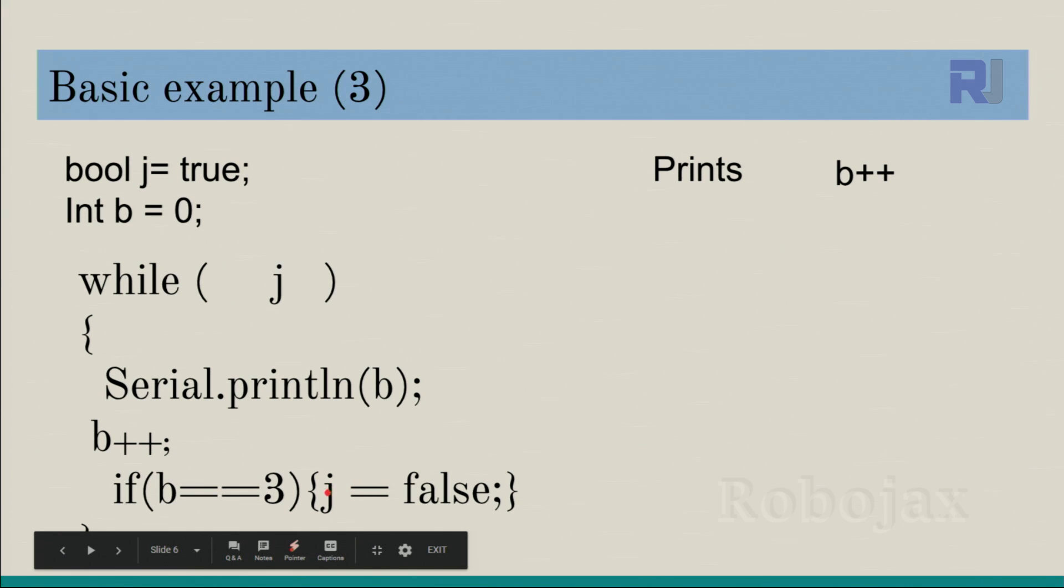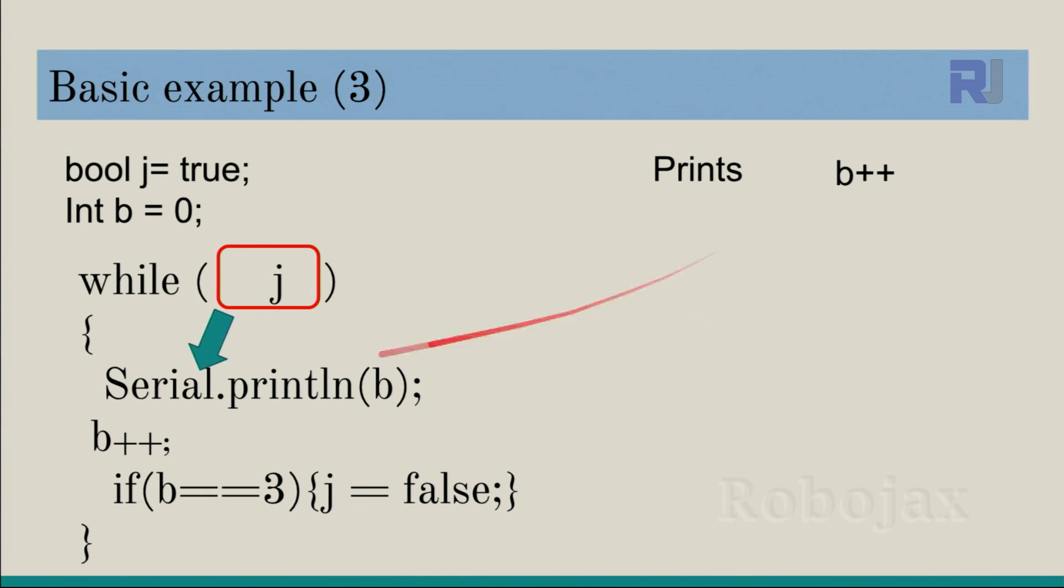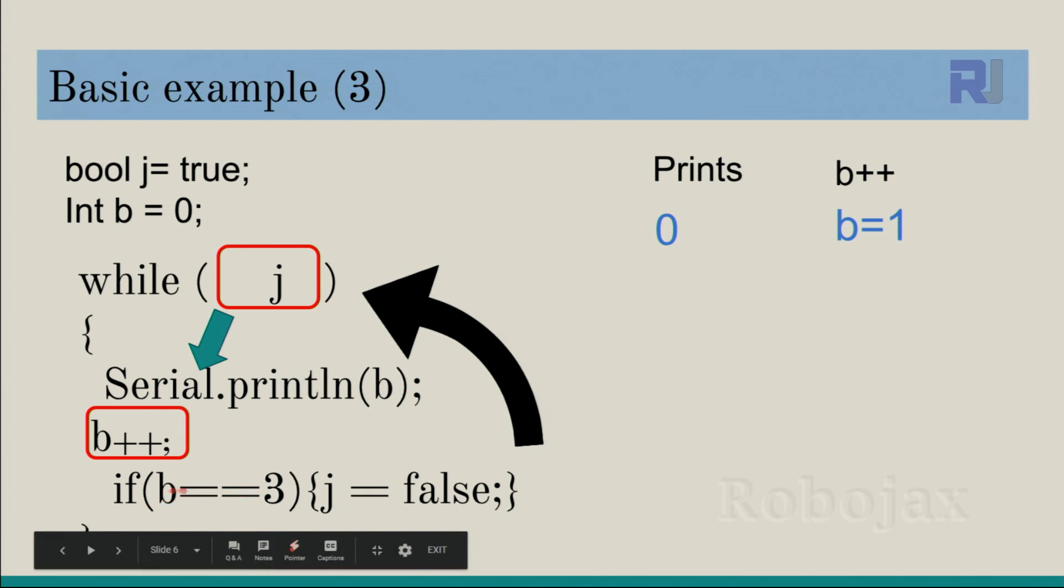It prints, increments, and here we have an extra condition. It says if b equals three, this means equal equal, it compares that if it is three, then set j equal false. First, while j, is j true? Because it is true, it comes here and prints zero, and then increment. B is zero, b becomes one. This is false because b is not equal three, so this condition is not true, so this will not happen. It goes here. Now is j true? Yes, because we have not changed it. J is still true. Come here and prints one.